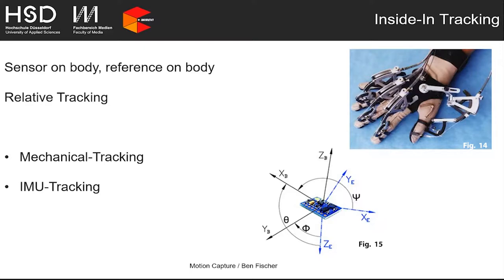Inside-in tracking is only relative tracking because both sensor and reference are on the body, so data is only relative to itself and movement around the area is only estimated. Mechanical tracking — used in robotics and medicine — is very fast and precise but heavy, blocks movement, and comes with high effort and high price. IMU sensors, combining velocity sensors and gyroscopes, are very precise and small, but they tend to drift: small errors accumulate over time and the longer the tracking runs, the larger the error grows.